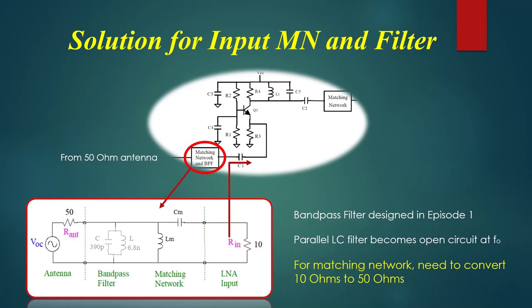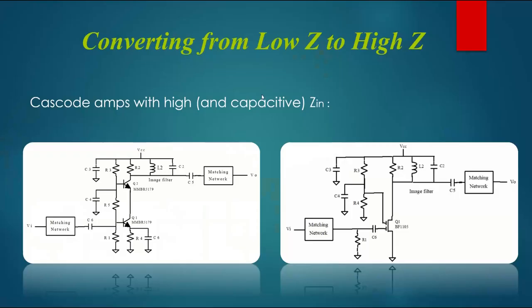Both of those networks started with a higher impedance and matched to a lower impedance. In general, these networks work in both directions. Let's explicitly look at converting from a low impedance to a high impedance.